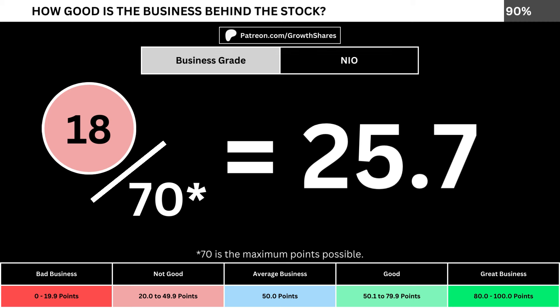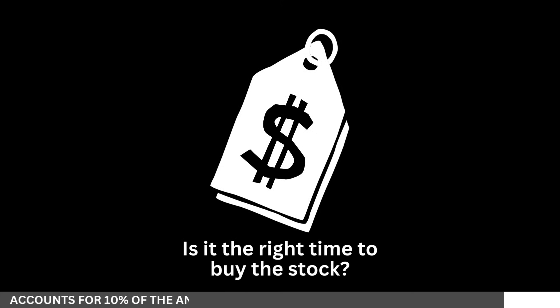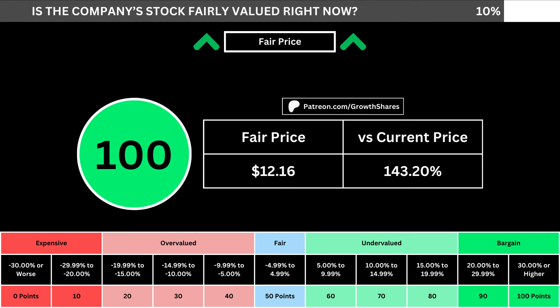We want the business grade to be above 50, meaning it has a better than average business. But of course, we can't forget about the fair price and whether it's the right time to buy the stock. I use a discounted cash flow model taking into account a 10% margin of safety. That translates into the company's fair price and how many percentage points above or below its current price the stock is. When we compare those numbers with the table below, we can see where the company's stock lies in its intrinsic value spectrum right now.